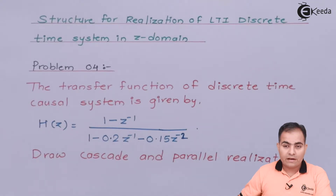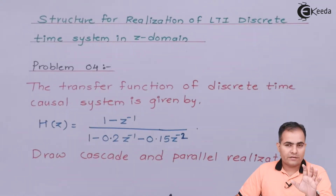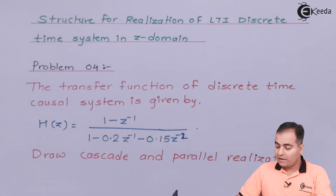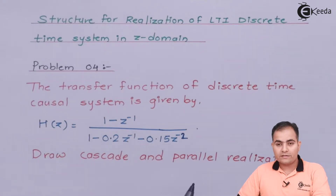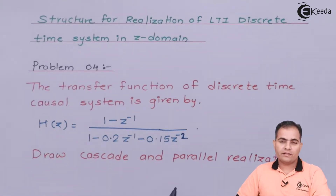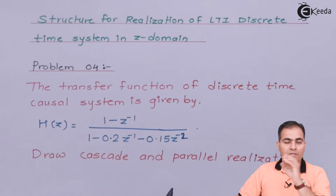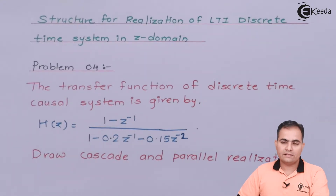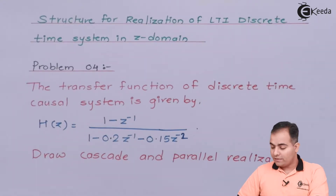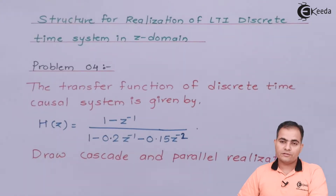In parallel format, we are going to use a partial fraction technique. From that partial fraction technique, we get the values of A and B, and we use those values for realization. Now let's see how we are going to proceed with the solution.